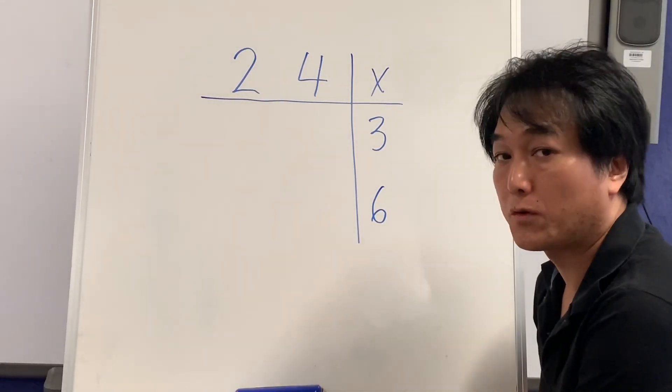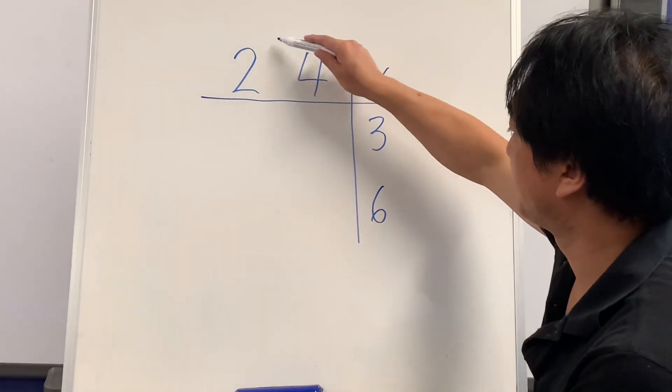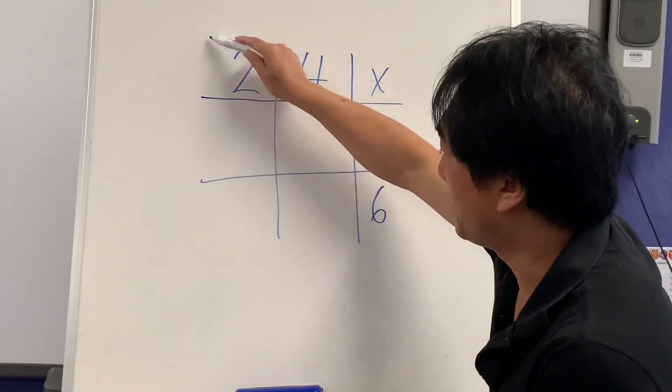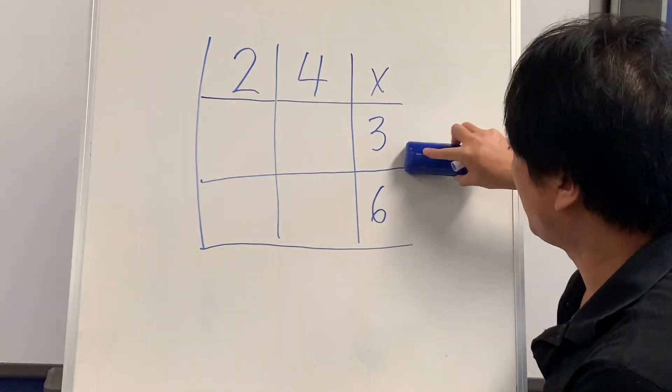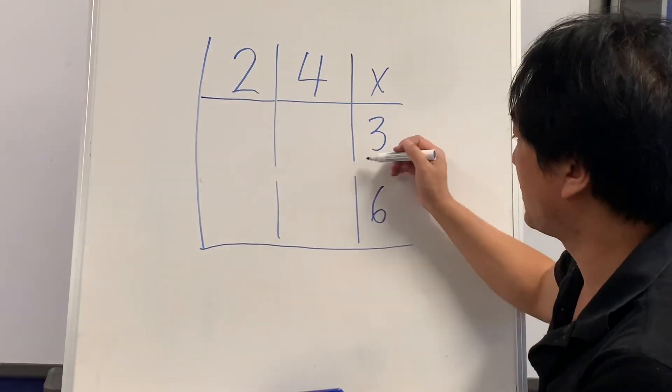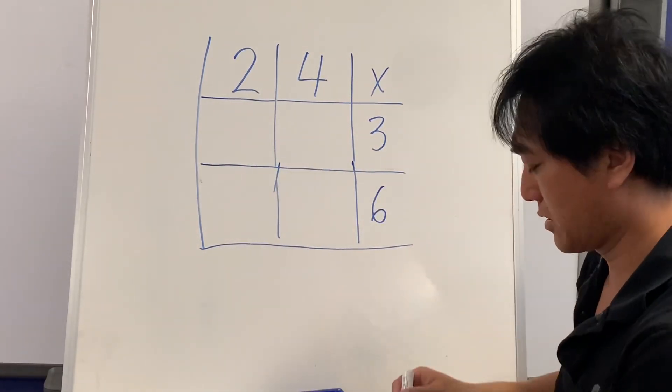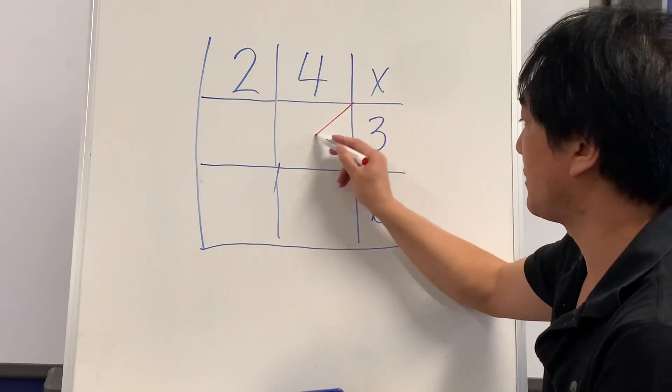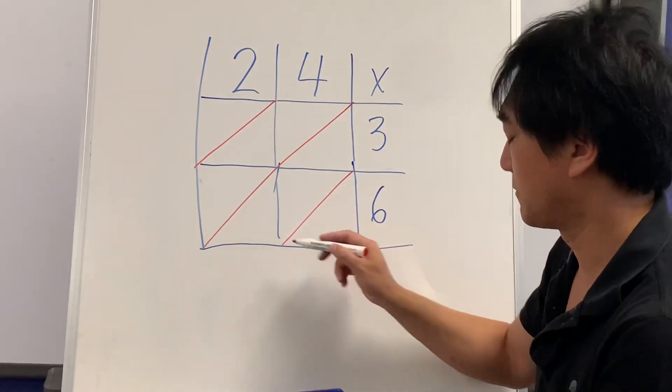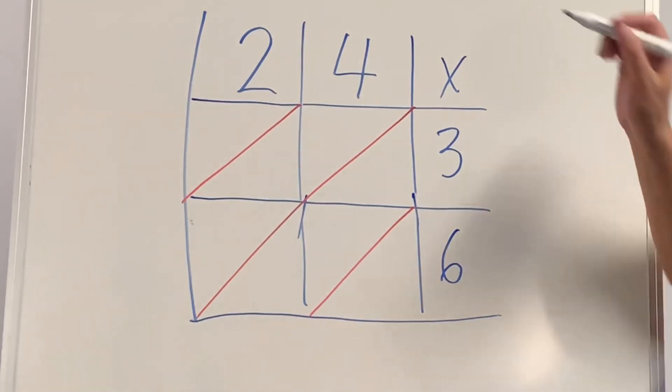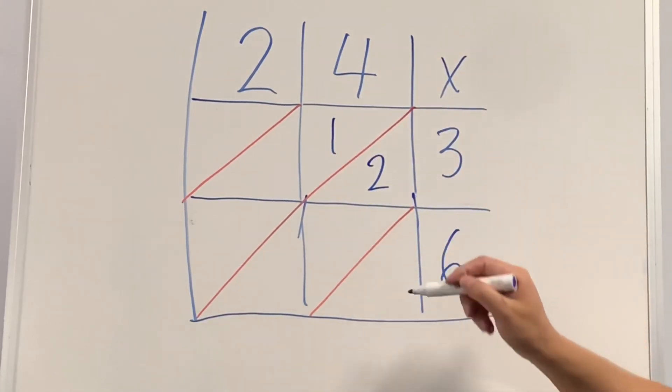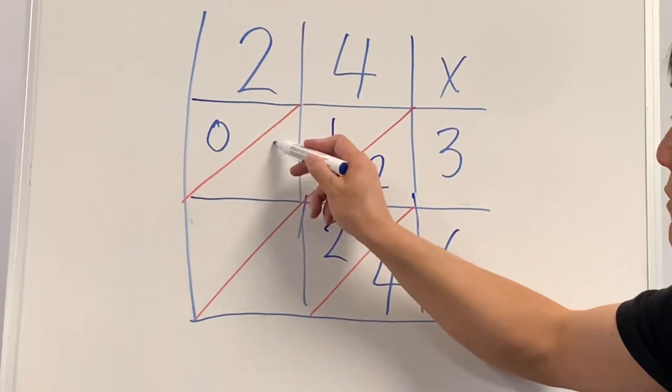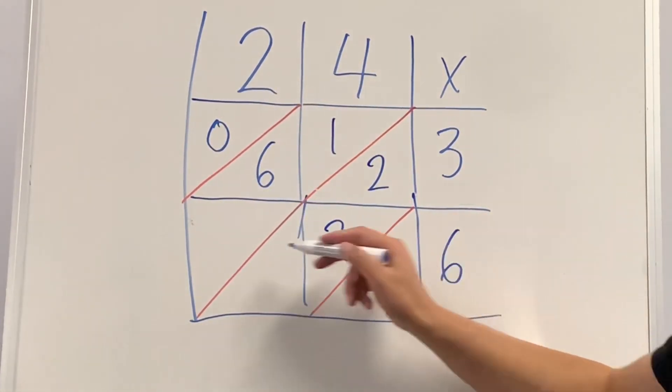I'm going to try 24 times 36. I'll give you a tip: try to write big numbers, it's a lot easier. Now we're going to draw a diagonal line. Let's try: 4 times 3 is 12, 4 times 6 is 24, 2 times 3 is 6 we'll put 06, 2 times 6 is 12.